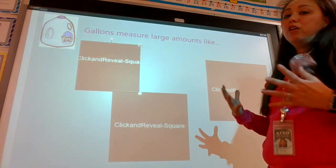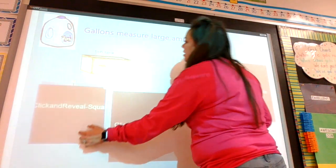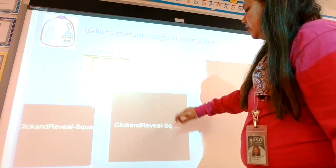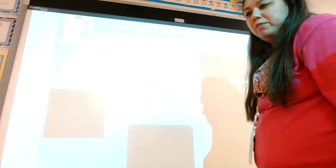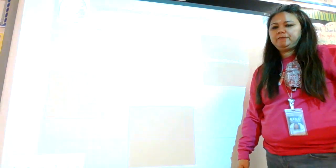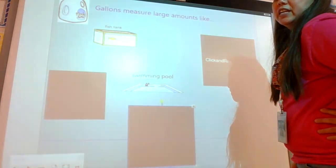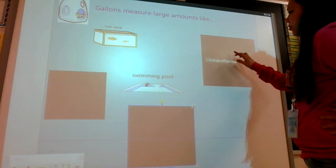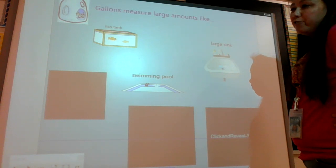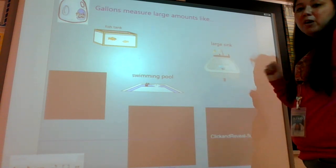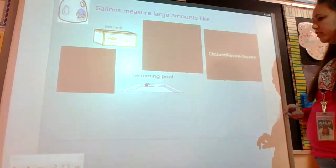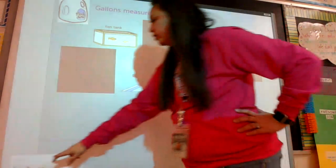Gallons measure large amounts of things. For example, if I wanted to use gallons, it would be for a fish tank because that holds lots of water. It would be a swimming pool. Swimming pools have lots of water, so we would use the largest unit. Large sinks—even this sink in here holds three to four gallons of water. Those are examples for using the gallon unit.